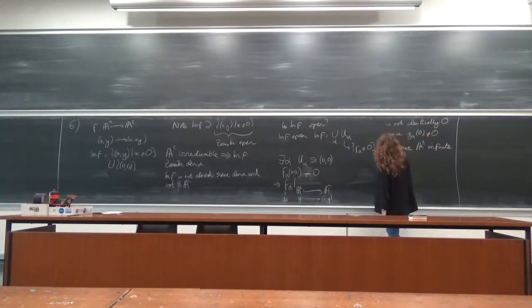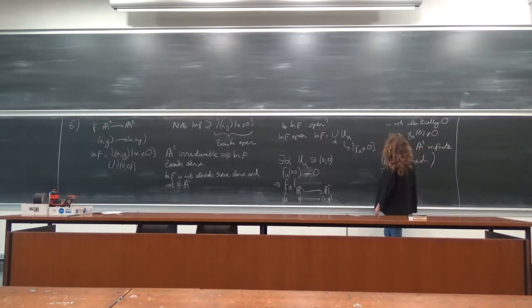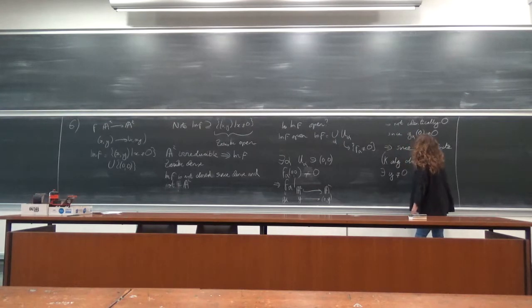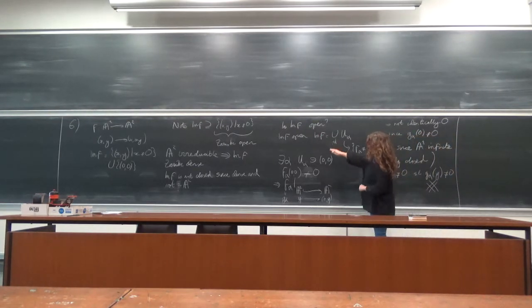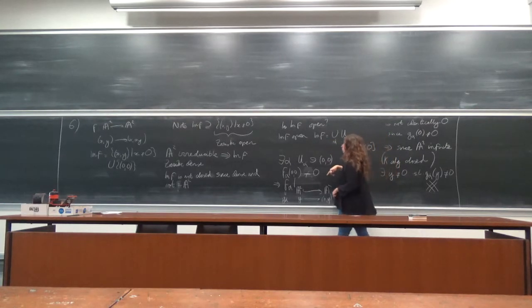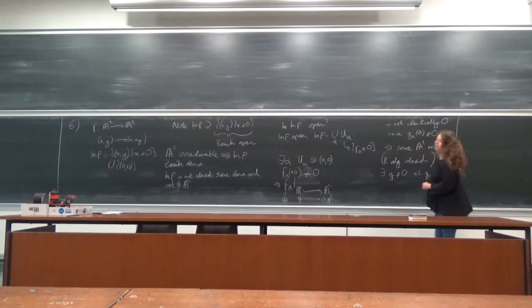So this is not identically zero because the base field k is algebraically closed. There exists points p different from zero such that g_alpha of p is not equal to zero. And this is a contradiction, because I had to have that g_alpha was equal to zero on anything outside of point (0, 0).